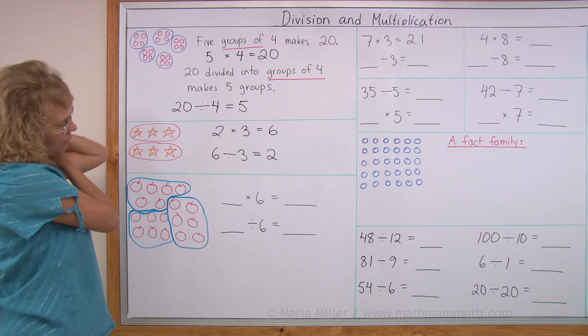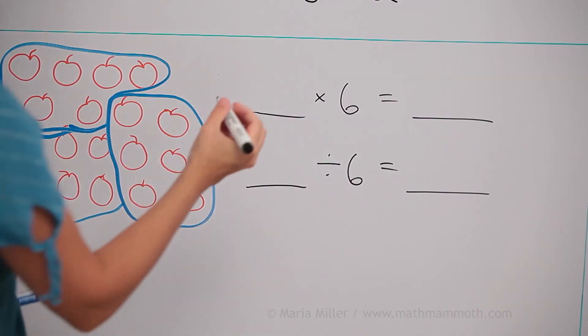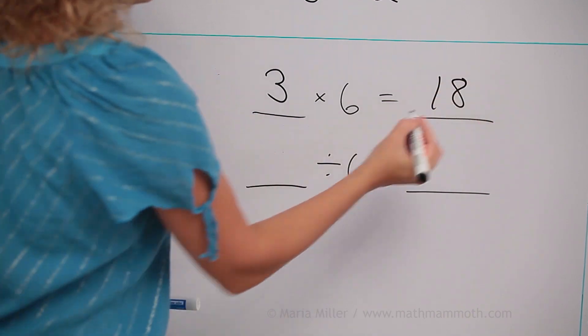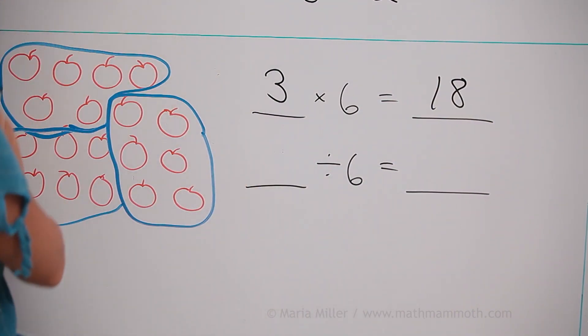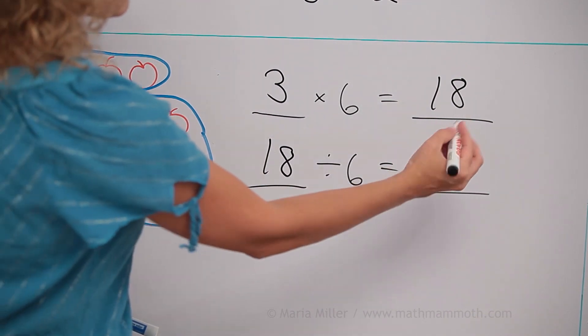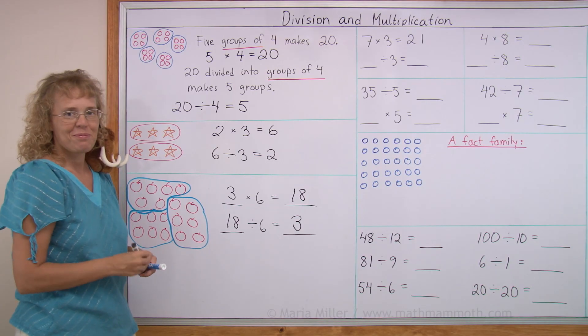He got three groups. So now it's easy. Three groups, three times six equals 18. And for the division, you start with the total number of apples. 18 divided into groups of six, three groups.